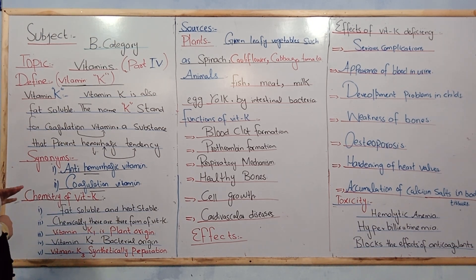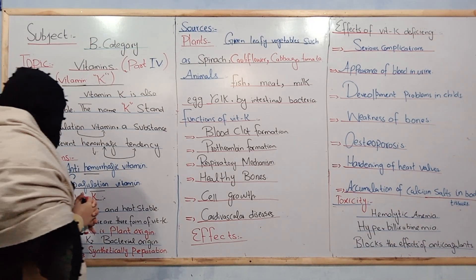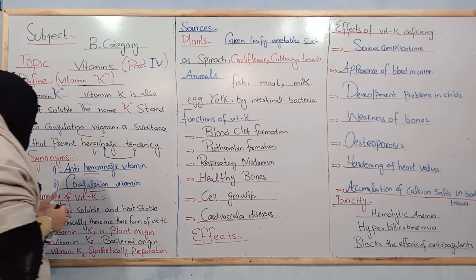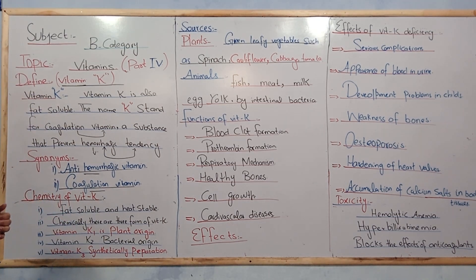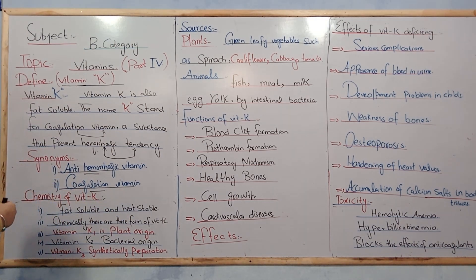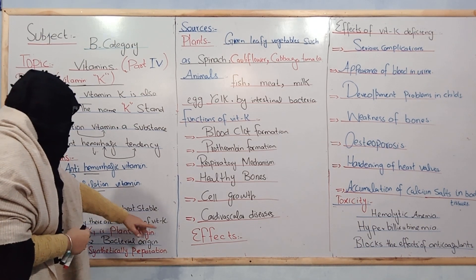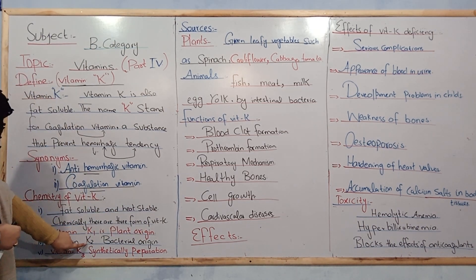We will now discuss the chemistry of vitamin K. Vitamin K is fat-soluble and heat-stable. Chemically, it is divided into three forms: vitamin K1, K2, and K3.